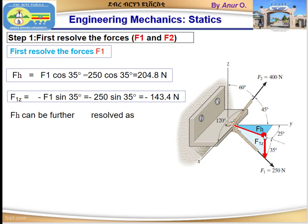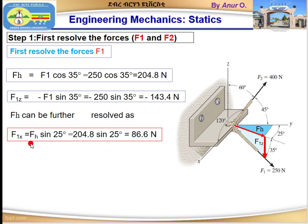Since Fh is in the xy-plane and the angle between the positive y-axis and Fh is 25 degrees, we can resolve Fh into x and y components. F1x is the x-component of Fh. Since this force is opposite to the transverse angle of 25 degrees, we use sine: F1x equals Fh sin 25 degrees. Substituting Fh = 204.8 N gives F1x = 86.6 N.